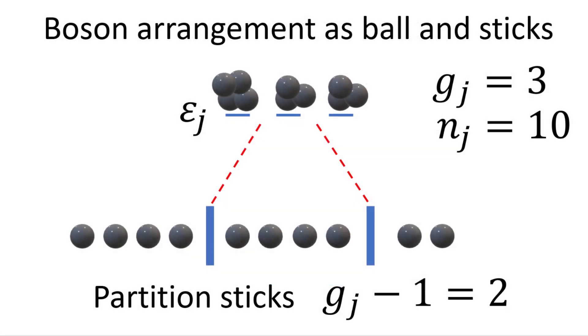To generalize the ways where these bosons can be arranged, it will be helpful to line up all the 10 bosons and partition them in accordance with the different states they occupy with partition sticks. The number of partition sticks will be g minus 1, which is 2 in this example.